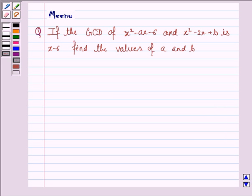Hello and welcome to the session. Let's discuss the following question. It says, if the GCD of x squared minus ax minus 6 and x squared minus 2x plus b is x minus 6, find the values of a and b.